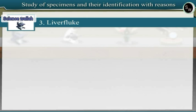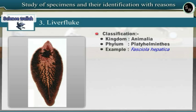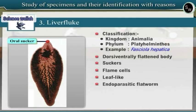Specimen 3: Liver Fluke. Observe the slide or preserved specimen of Liver Fluke. Liver Fluke belongs to the phylum Platyhelminthes of Kingdom Animalia. Liver Fluke has a dorsoventrally flattened body with suckers and flame cells in the body, hence it is included under phylum Platyhelminthes. The scientific name of Liver Fluke is Fasciola hepatica. Its body is leaf-like. It is an endoparasitic flatworm generally found in the liver of sheep.